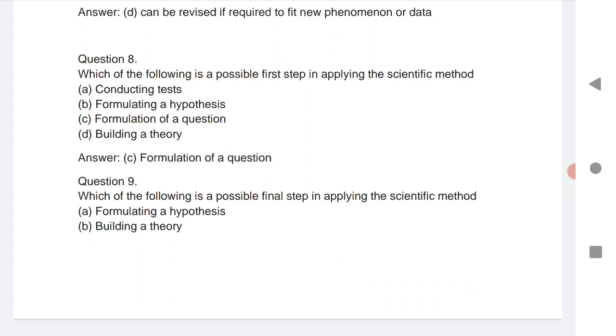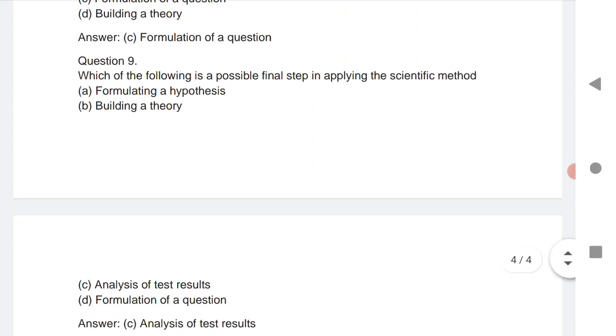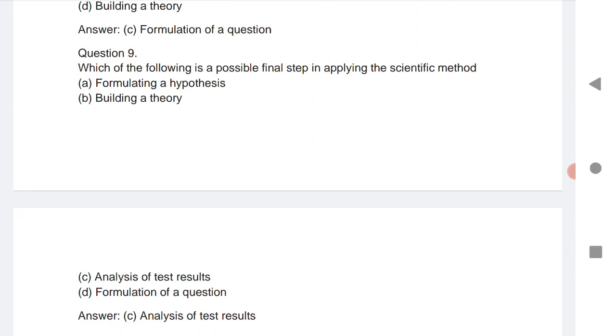Which of the following is possible for a first step in applying the scientific method? Formulation of question. Ninth question is: which of the following is a possible final step in applying scientific method? Analysis of test results.